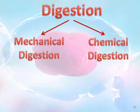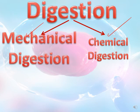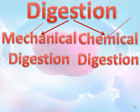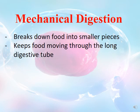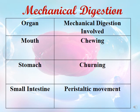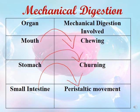Digestion is divided into two types: mechanical digestion and chemical digestion. Mechanical digestion breaks down food into smaller pieces, cuts the food into smaller pieces, and keeps the food moving through the digestive tube. Types of mechanical digestion: in the mouth it is called chewing, in the stomach it is called churning, and in the small intestine it is called peristaltic movement.